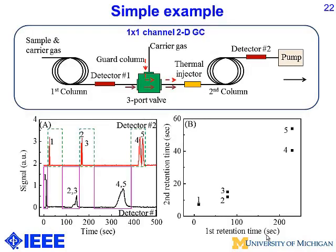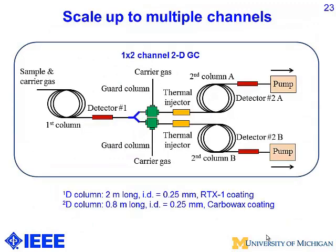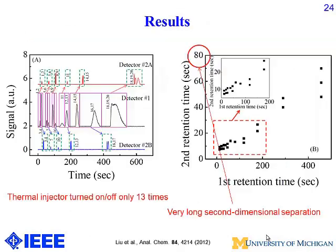Here's the simplest implementation: we have a first-dimensional and second-dimensional column, with a detector after the first-dimensional separation and another after the second. In an example with five analytes grouping into three co-eluted peaks, we send each peak to the second-dimensional separation where they are well separated. In a one-by-two channel configuration, co-eluted peaks are sent alternately to upper and lower channels. The 2D chromatograms show second-dimensional separation up to about 80 seconds — something that cannot be done with conventional 2D GC where the second separation must finish within five to ten seconds.